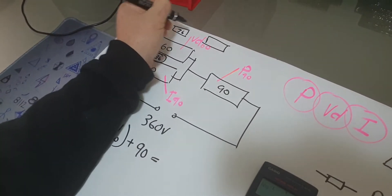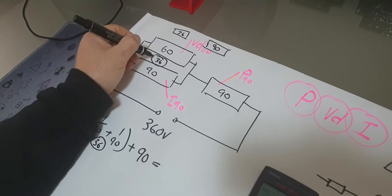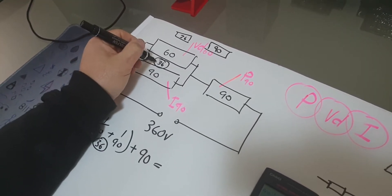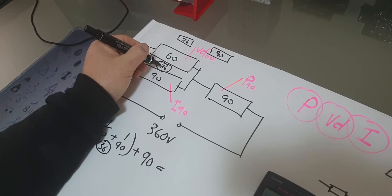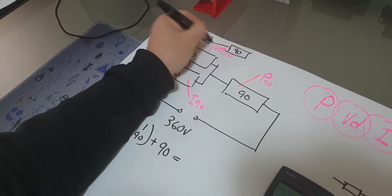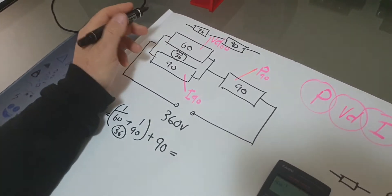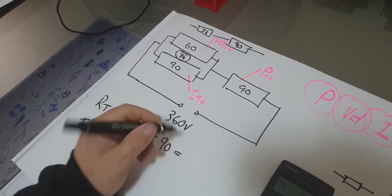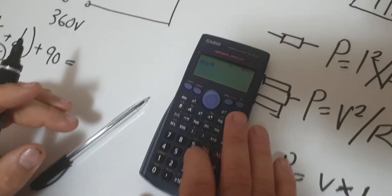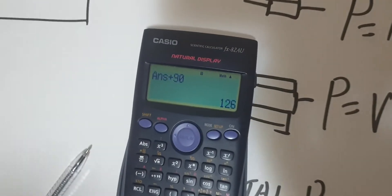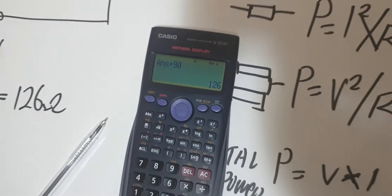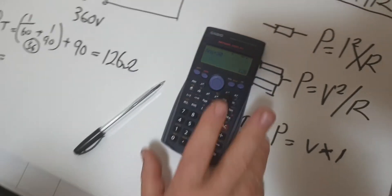So now I have 36 ohms in series with the 90-ohm resistor. That gives me 36 plus 90 equals 126 ohms total resistance. The common value between those two parallel resistors is 36 ohms.